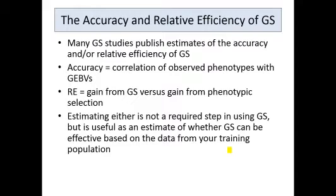Estimating the accuracy and the relative efficiency is not a required step in actually doing genomic selection, but it's obviously very useful so you can see whether genomic selection might be effective based on the data from your training population. It's a good way to see if this is something that's going to be beneficial to you before you start implementing it.